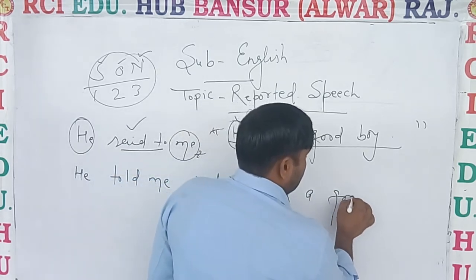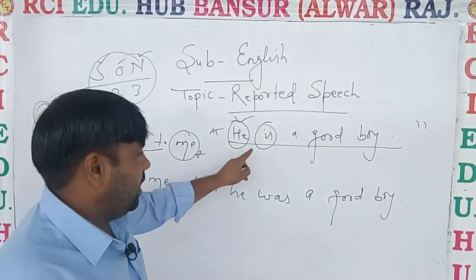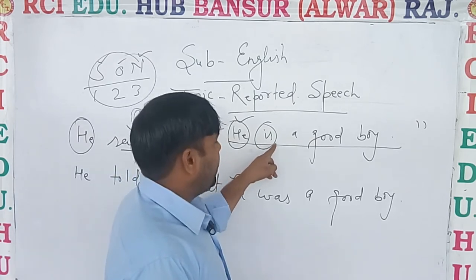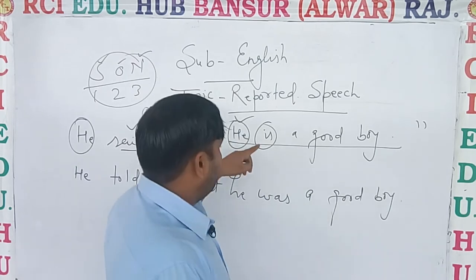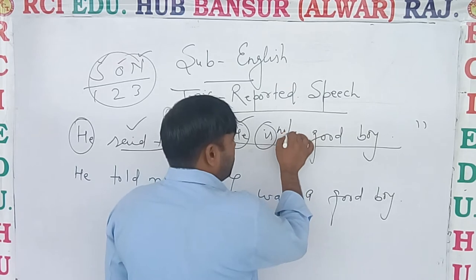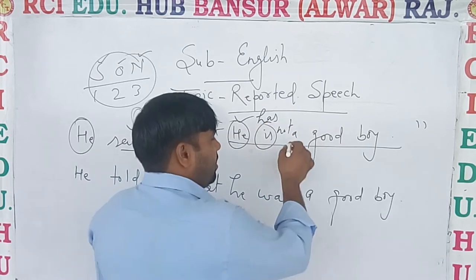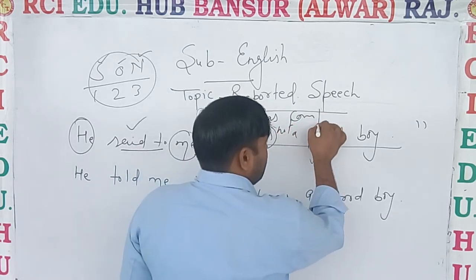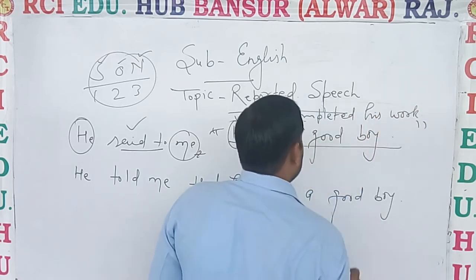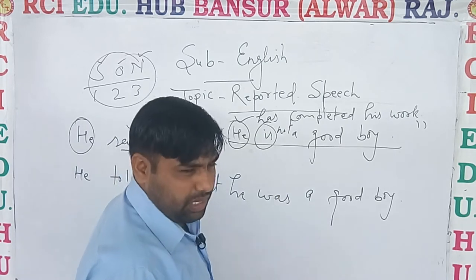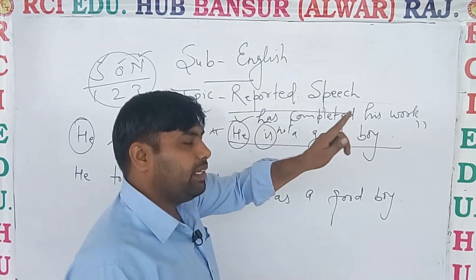He will be both. If it is written over there 'he is doing work', then it becomes 'was doing work'. He is not — then he was not. He has completed his work — 'has' means present and changed into past, then 'had'. He had completed his work.